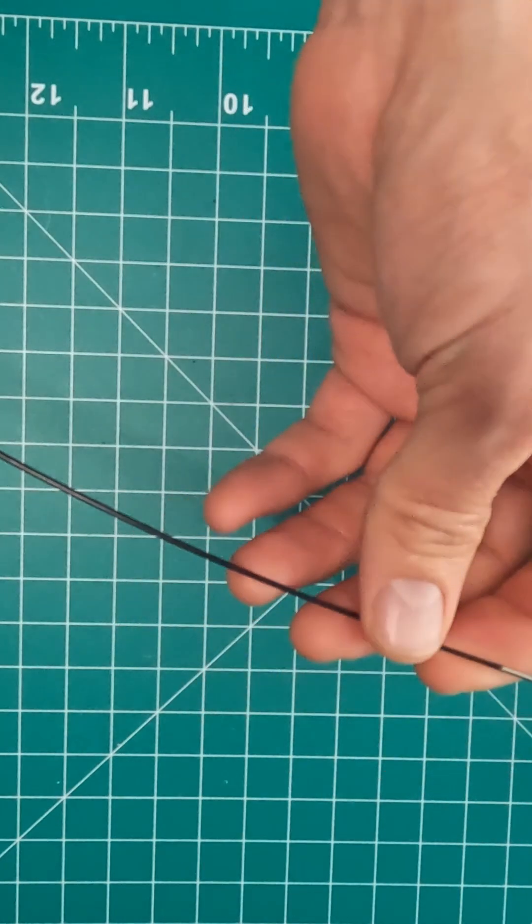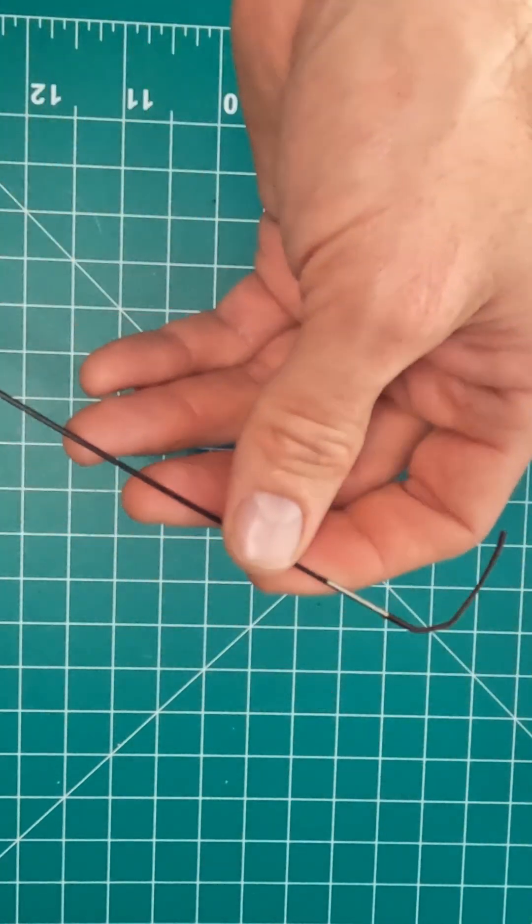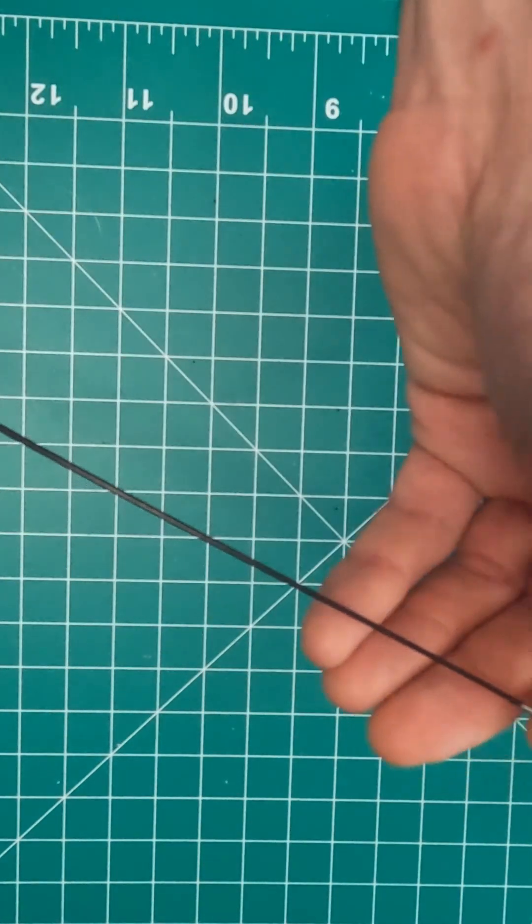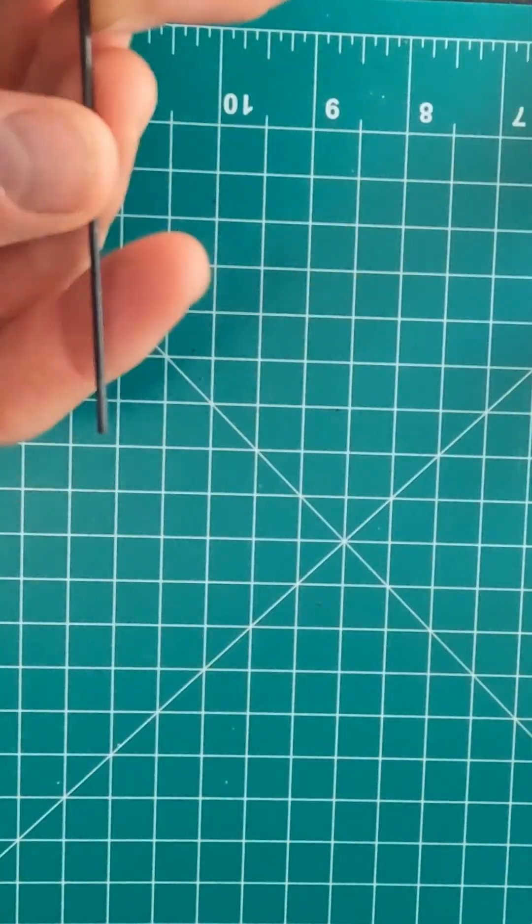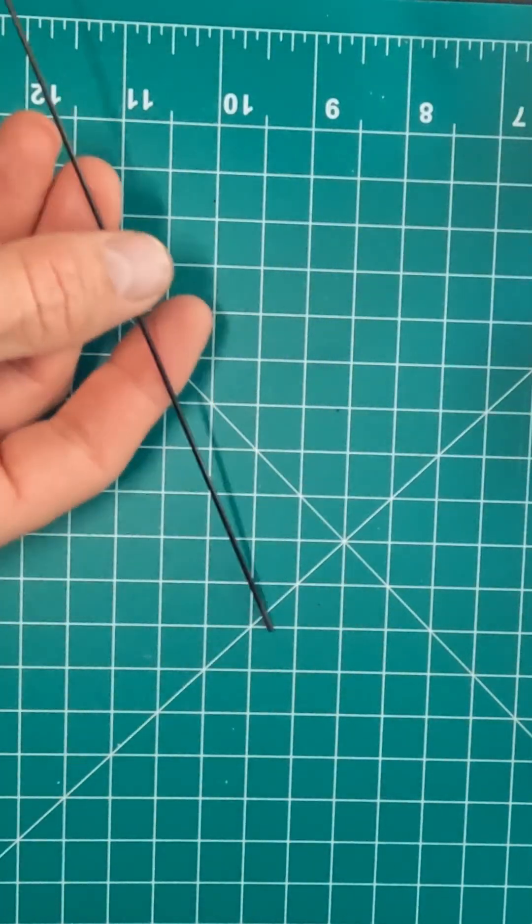Pretty much every mast you buy from AliExpress is going to have this dinky little top. Let's get rid of that. We do not need that. Unscrew it. We want to remove that top segment.